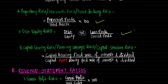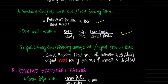Next is debt equity ratio, calculated as debt upon equity or loan funds upon own funds. Debt includes borrowed funds as secured or unsecured loans including debentures and interest accrued and due on loans. Proprietor's funds include paid up share capital, reserves and surplus minus fictitious assets and accumulated losses. This is a solvency ratio indicating the proportion of debt and equity in the financing of the concern, and also shows protection cover for long term creditors. A low debt equity ratio is considered favorable. If the ratio is 2:3, it is considered satisfactory, implying that out of three total funds, debt would be two and equity would be one.